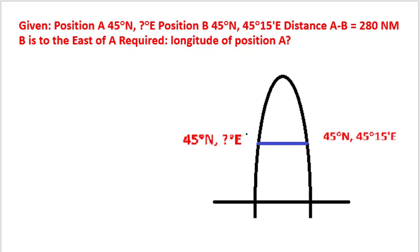This is point A which is at 45 degrees north latitude, longitude not known. And this is point B which is again 45 degrees north latitude and longitude of 45 degrees 15 minutes east. Distance A to B is 280 nautical miles. We have to find the longitude of A.